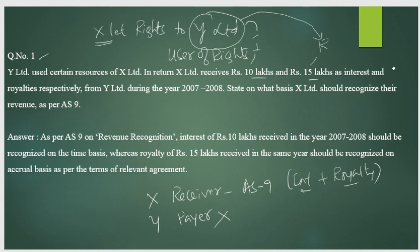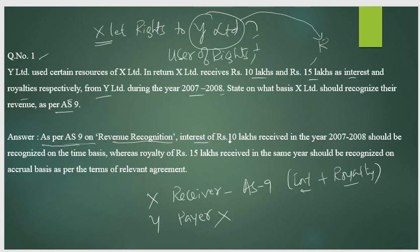10 lakh interest and 15 lakh royalty are received from Y Limited during 2078. On what basis should X Limited recognize this revenue as per AS-9? AS-9 is Revenue Recognition. Interest of 10 lakh rupees for the year 2078 should be recognized on the basis of proportionate time.